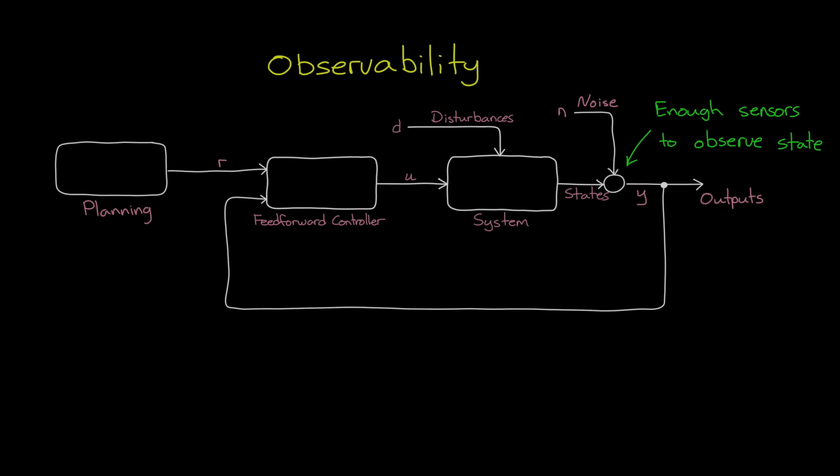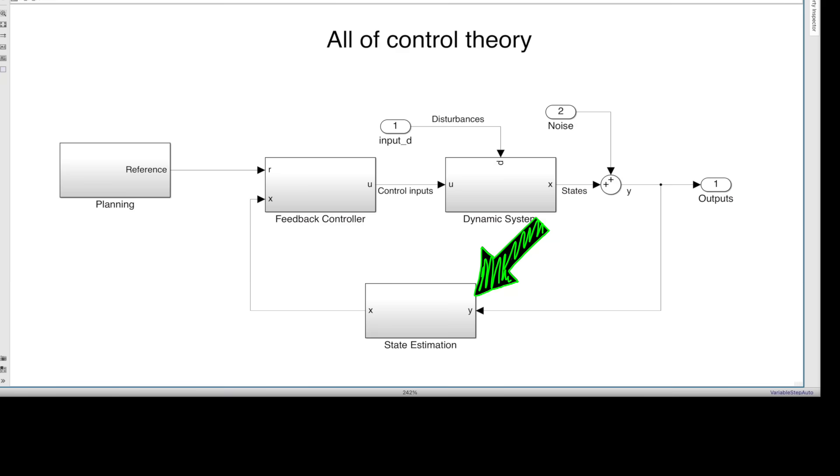So there are two things here. We need to reduce measurement noise. And we need to manipulate the measurements in such a way that allows us to accurately estimate the state of the system. State estimation is therefore another important area of control theory.